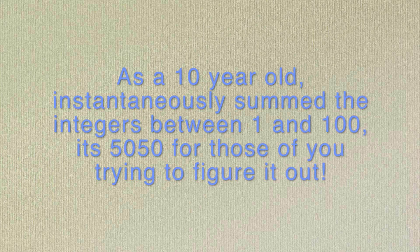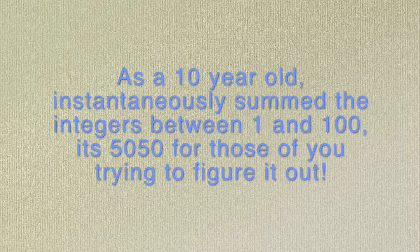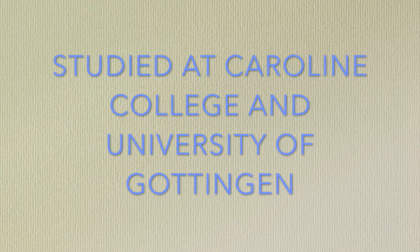A very young Johann continued to impress by summing the integers between 1 and 100 almost instantly for his teachers in his early years of schooling. This would mark the beginning of a mathematical genius.